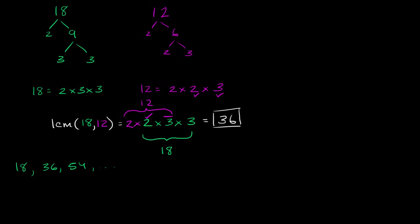And the multiples of 12 are 12, 24, 36, and immediately I say, well, I don't have to go any further. I already found a multiple of both, and this is the smallest multiple of both, it is 36.